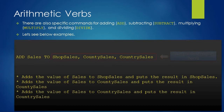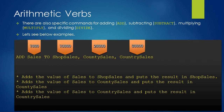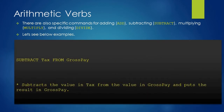In the third example, we are adding the value of one variable to multiple variables in a single statement. Here we are adding the value of the sales variable to shop sales, county sales, and country sales. So if sales is 1,000 and shop sales, county sales, and country sales are 10,000, 20,000, and 30,000 respectively, then after execution the sales value will be added to all three variables: shop sales will have 11,000, county sales will have 21,000, and country sales will have 21,000.